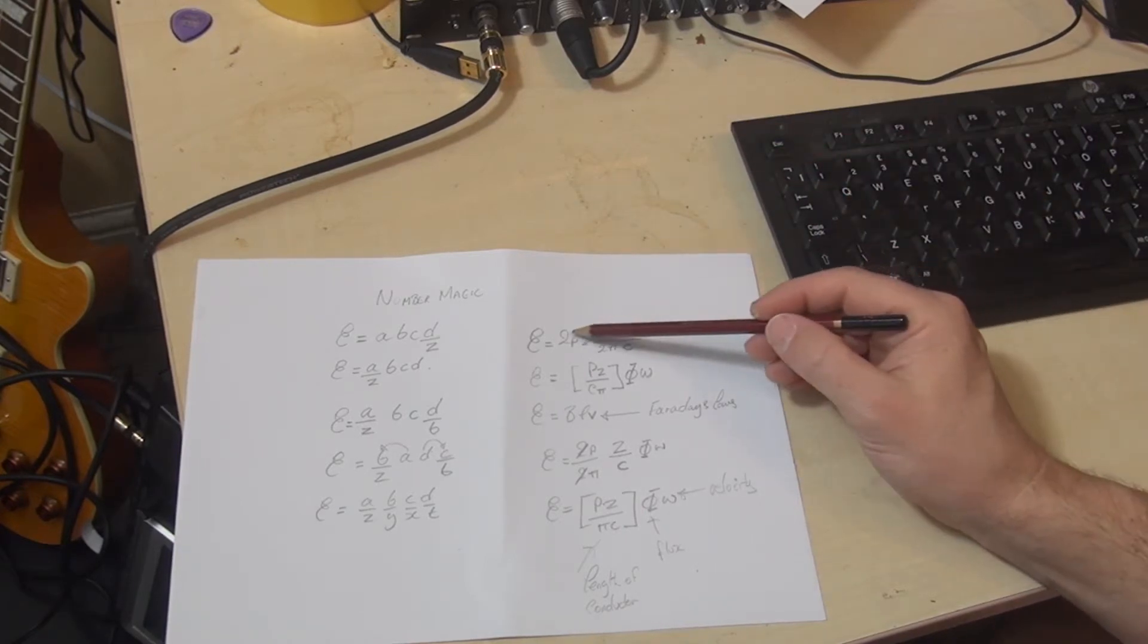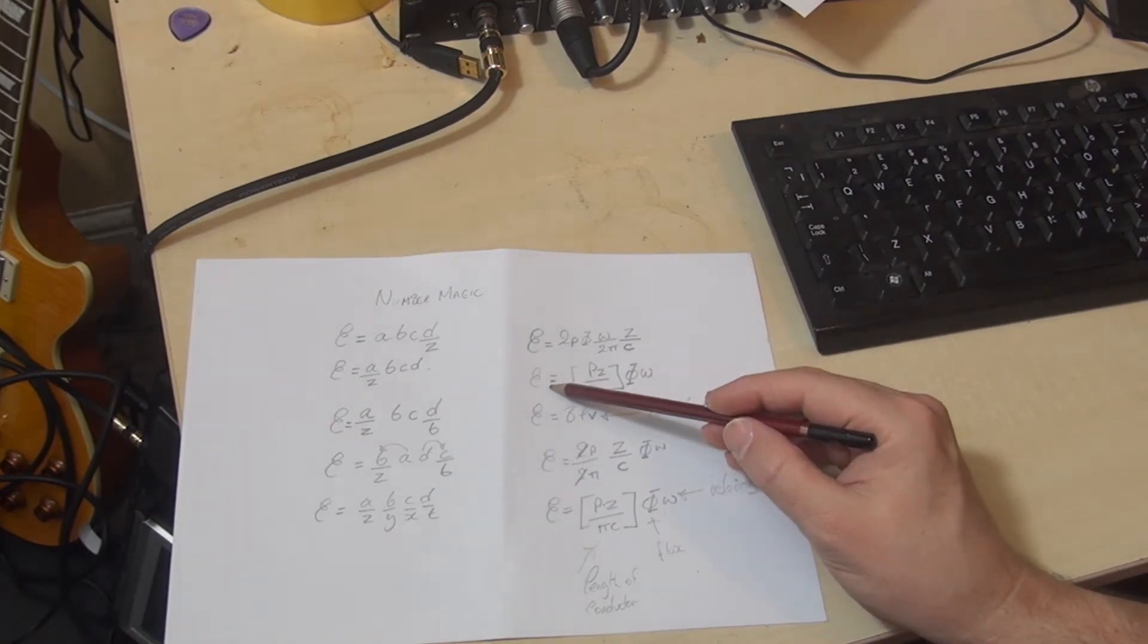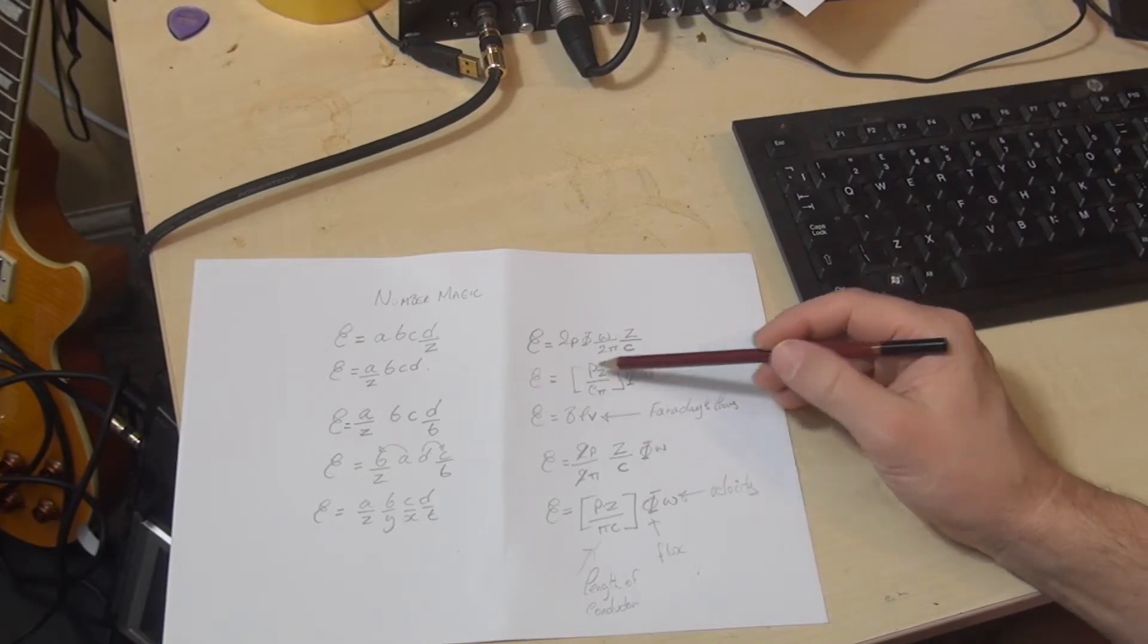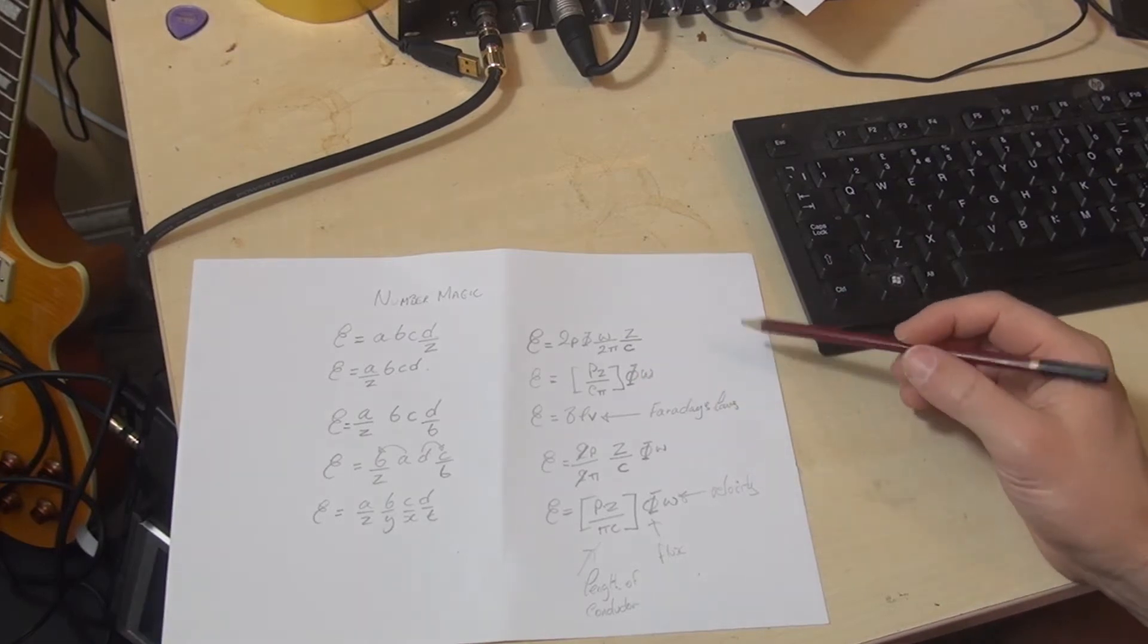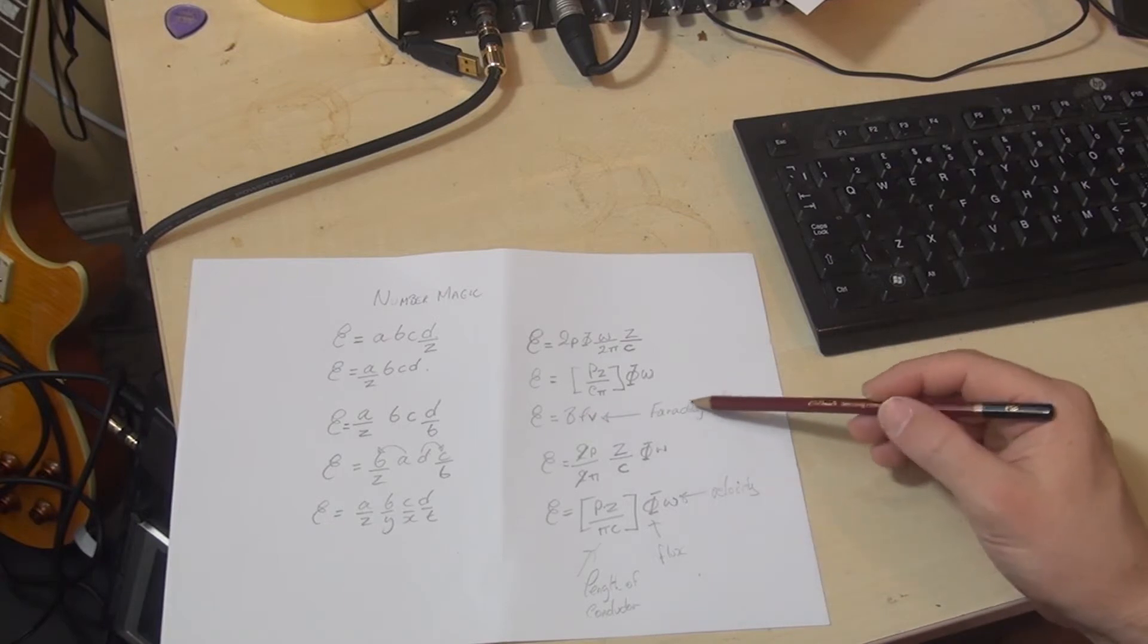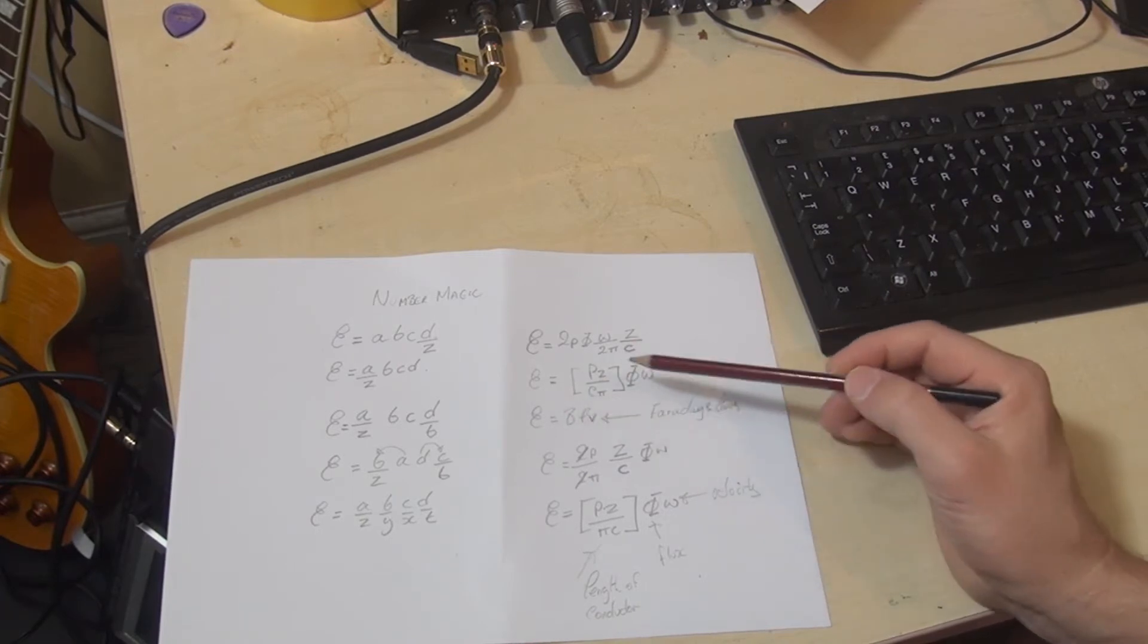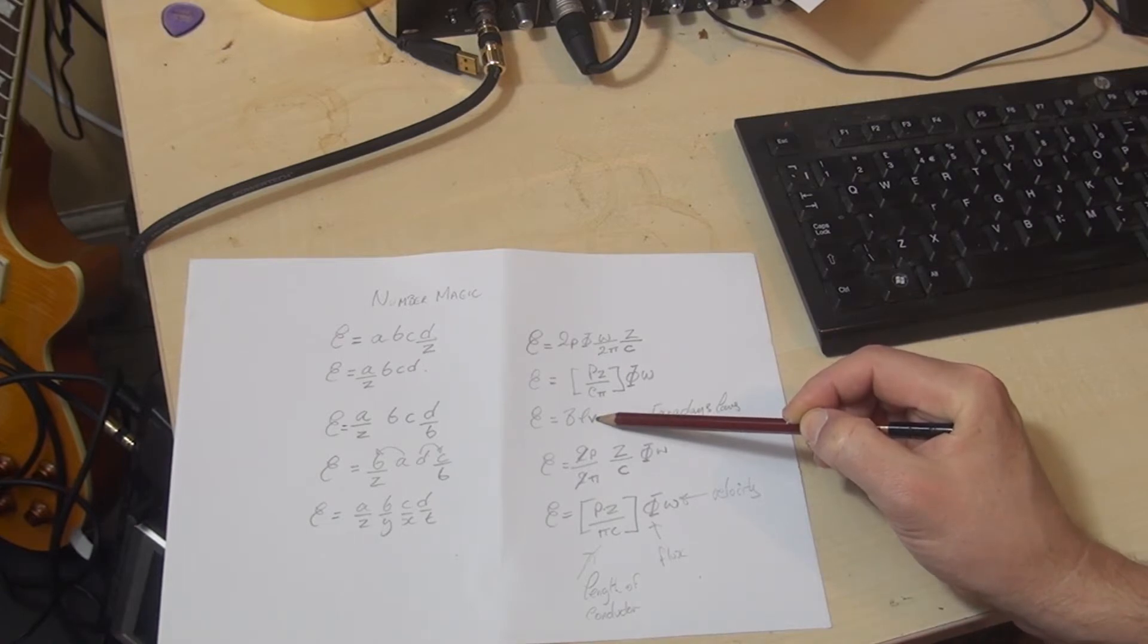And that can be simplified using these techniques to, it can be simplified down to this here. So we've effectively got PZ over C times pi, in brackets, times the flux times the radians. And that equation links directly to Faraday's well-known law of electromagnetic induction. The induced EMF is equal to the flux times the length of the conductor times the velocity, or the speed of relative movement.